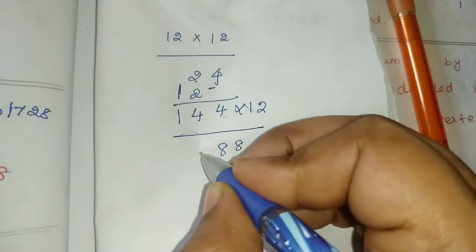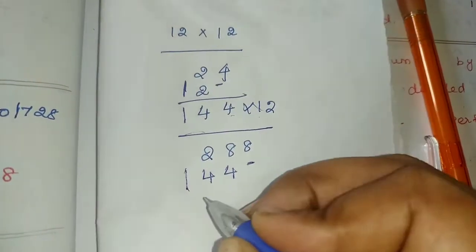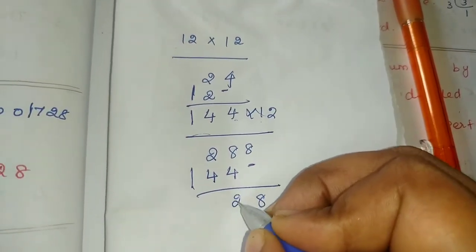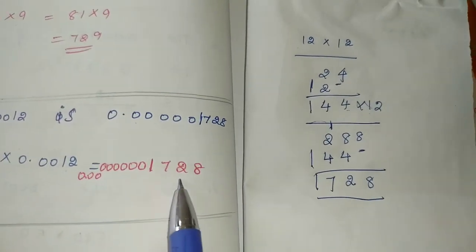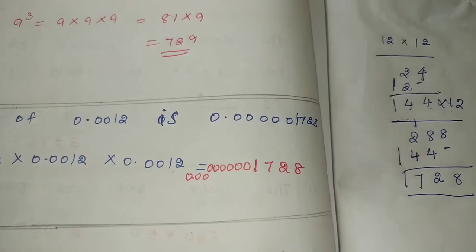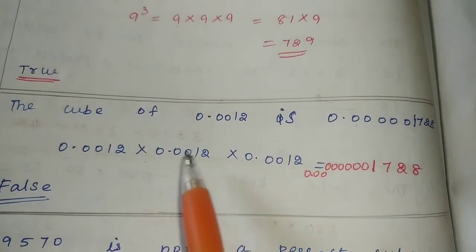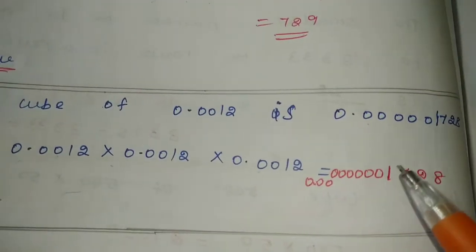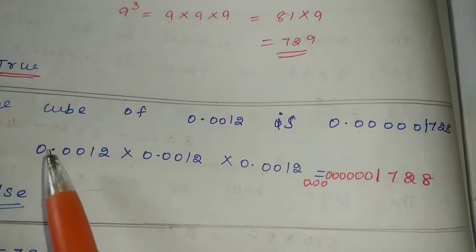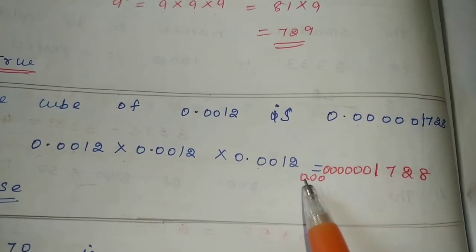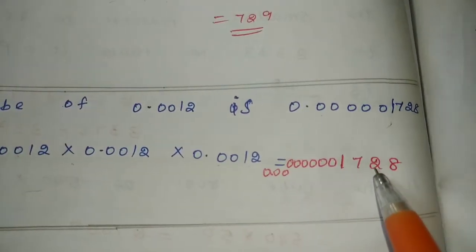Working through the multiplication: 2 × 2 × 2 = 8, and then counting the decimal places. 0.0012 cubed — multiplying the digits gives 1728, and counting the zeros from three decimal places each: 3 × 4 = 12 decimal places total, giving 0.000000001728.